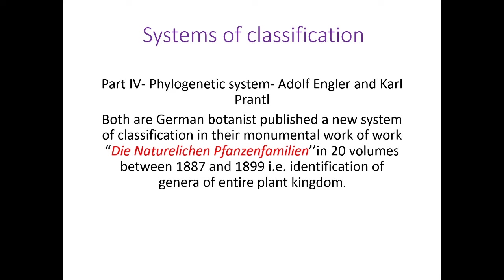Now we have completed the first chapter, that is introduction to taxonomy of angiosperm. In that topic, we have studied the concepts of systematics and taxonomy. After that we have studied the artificial and natural classification systems. As per our syllabus, there are three systems: artificial system, natural classification system, phylogenetic classification system, and APG classification system. Out of that, we have completed the artificial and natural classification systems.